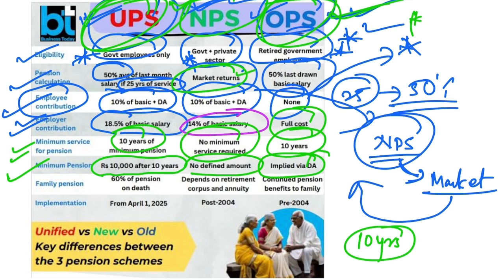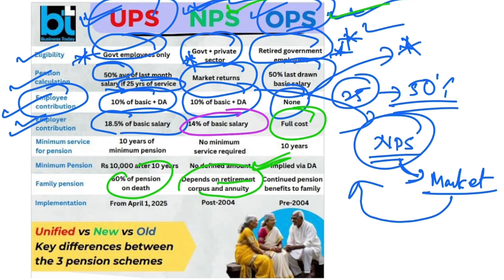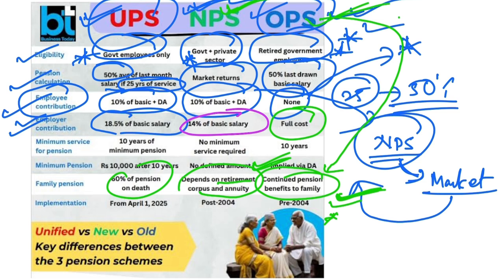Regarding family pension: in the Unified Pension Scheme, 60% of the pension is given on the death of the employee. So if an employee passes away, 60% of their pension would be given to the family. NPS family pension depends on the retirement corpus and annuity accumulated over the years. In the Old Pension Scheme, the equivalent pension that the employee was receiving is given to the family — the pension amount does not change, so the family receives the full equivalent pension.